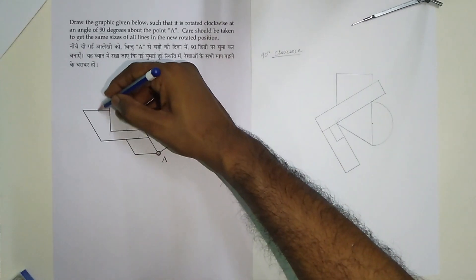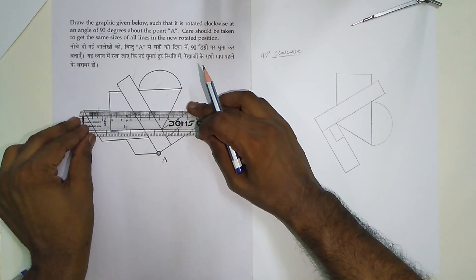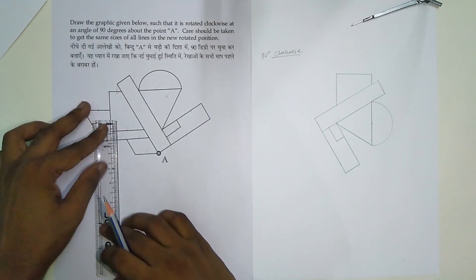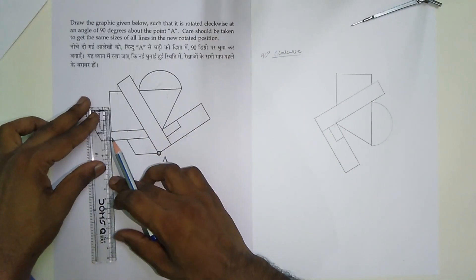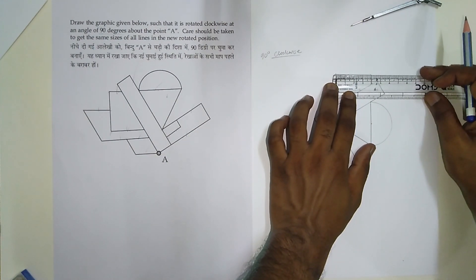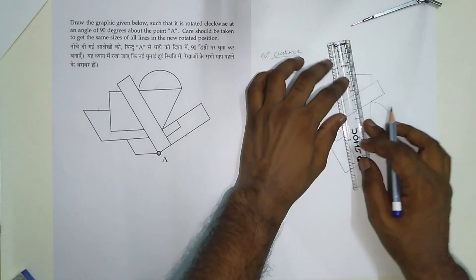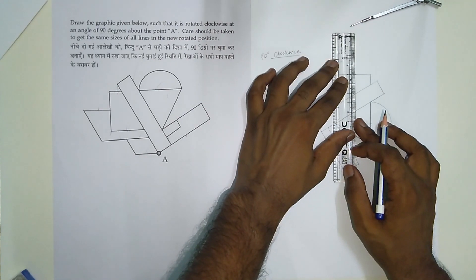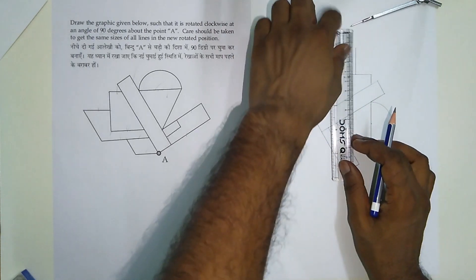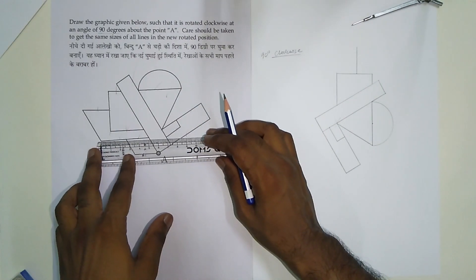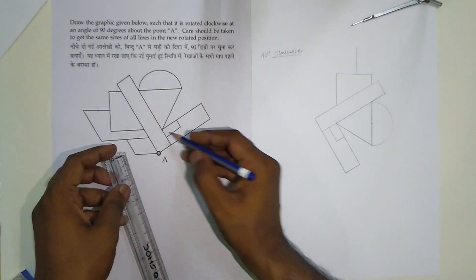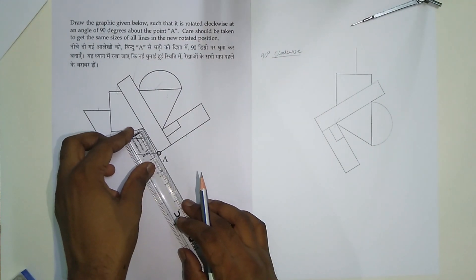Now draw this line and this line. From here to here it is 2.8, and from here to here it is 2.2. And this line is 5 centimeters. We should have this one also — this is 1 centimeter.